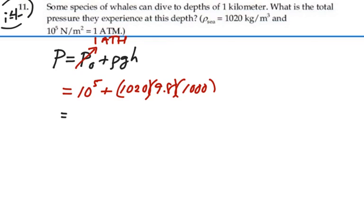So this is going to be equal to 10 to the 5 plus, and we have 1,020 times 9.8 times 1,000, which is 9,996,000.